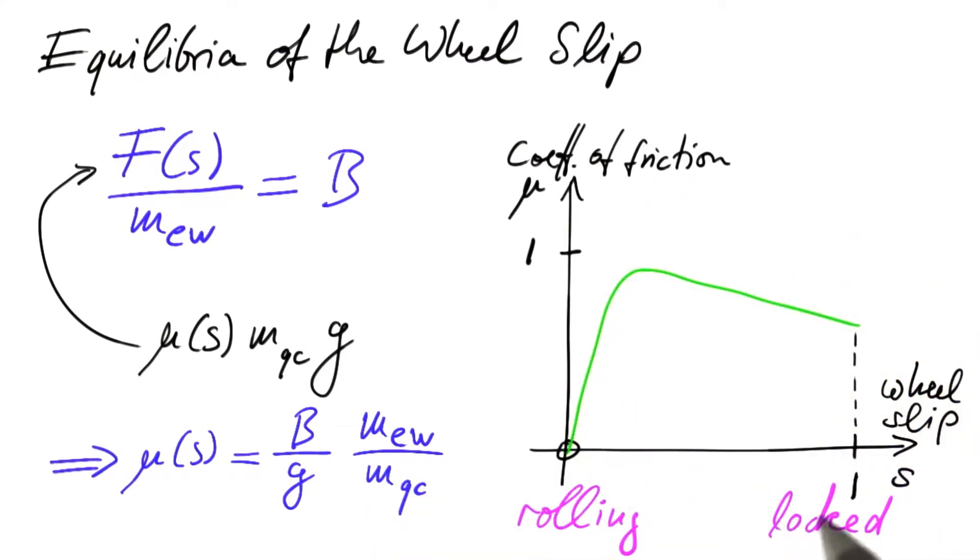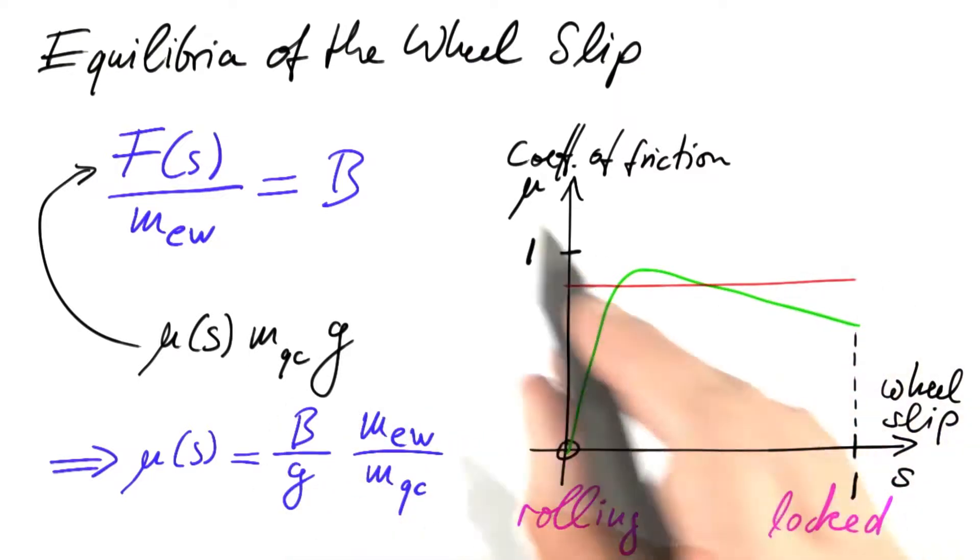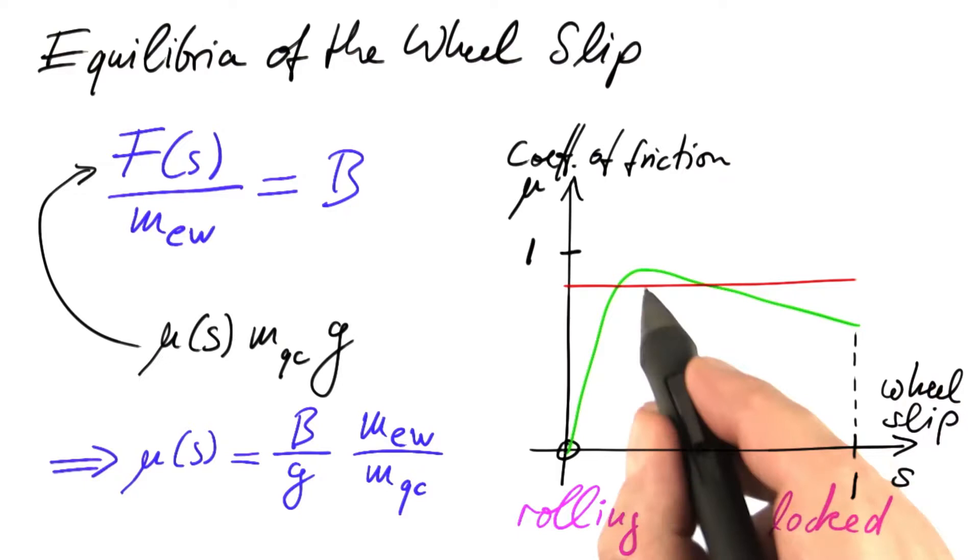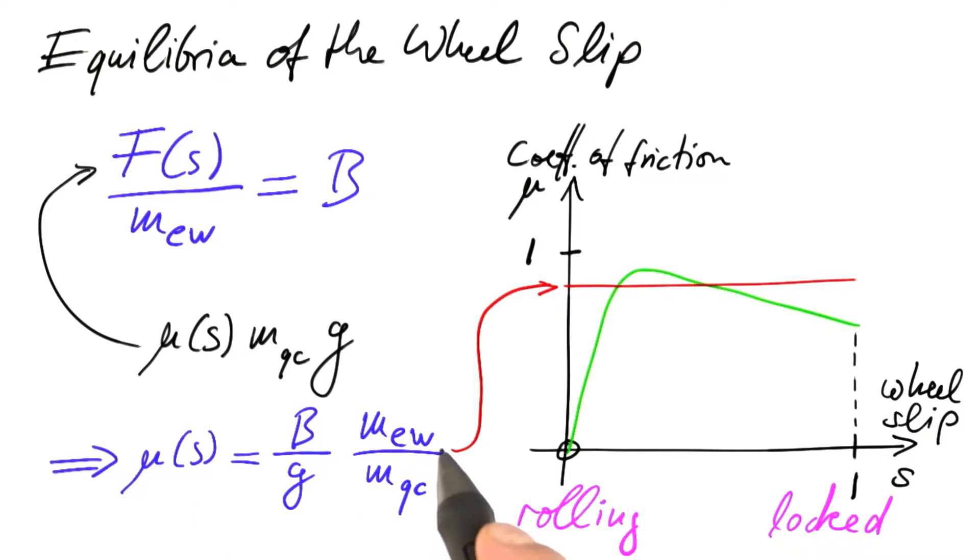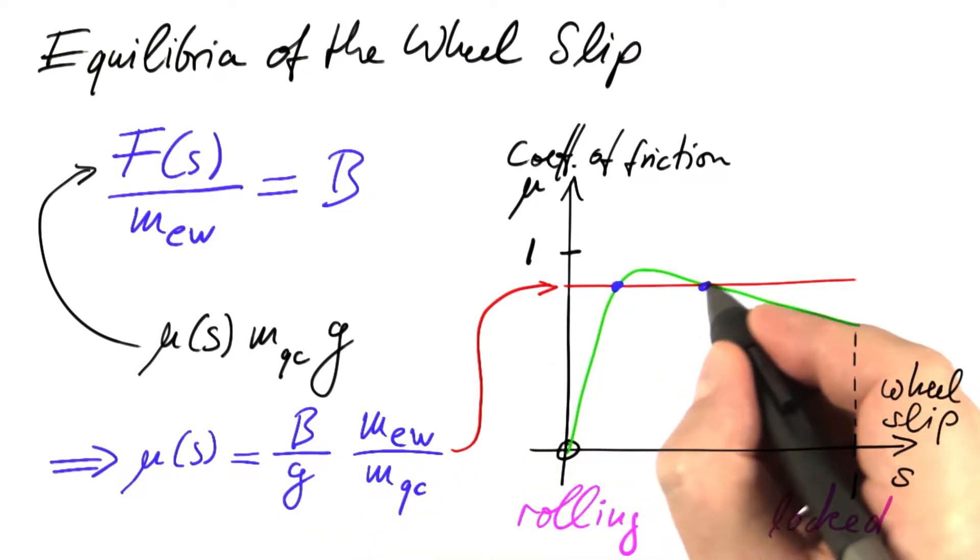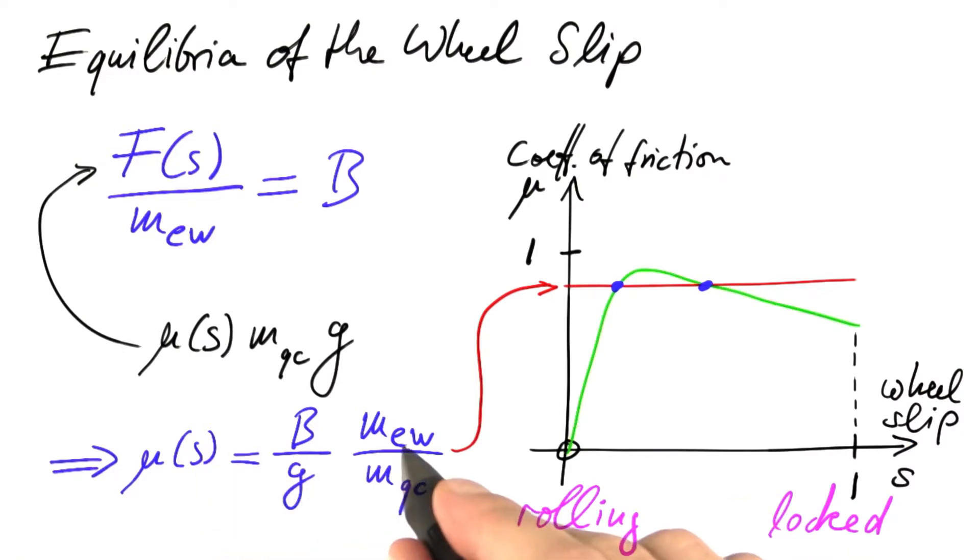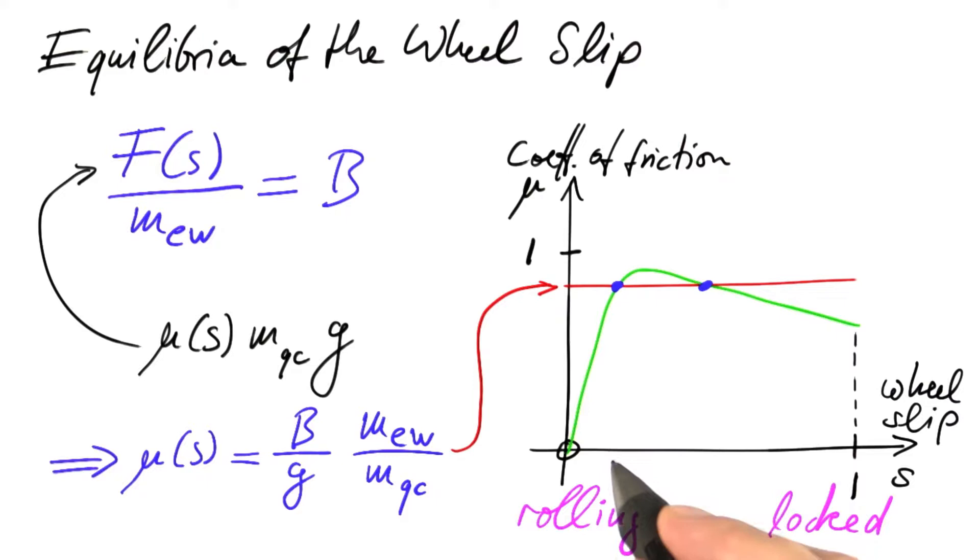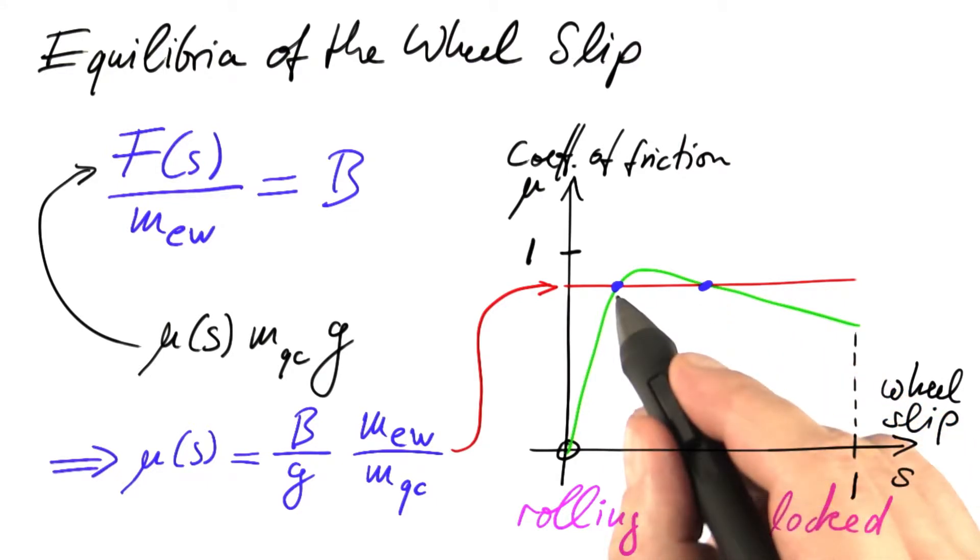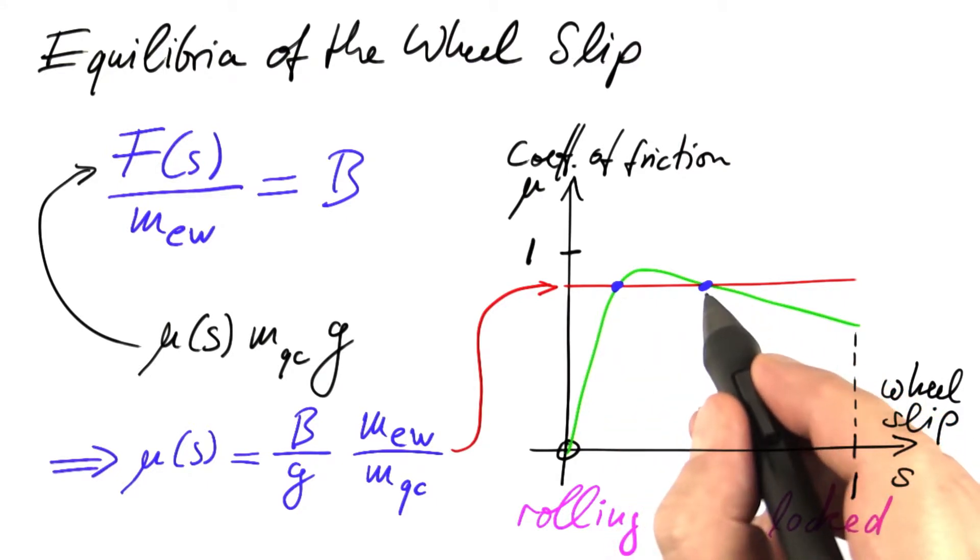And now we can check with our diagram what this means. If you brake with an intensity slightly below the optimum, the coefficient of friction has to be on such a line, slightly below its maximum value. This has to be the value of our coefficient of friction, and hence of the right-hand side. We have two options to satisfy this equality, and hence two possible equilibria. This value of s and this value of s. The lower one is stable, the upper one is unstable.